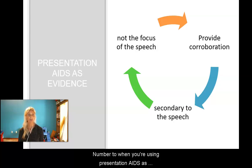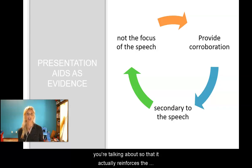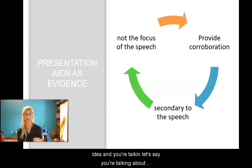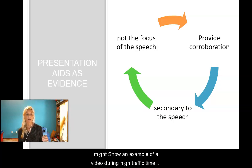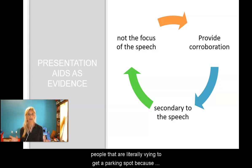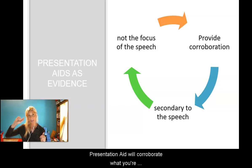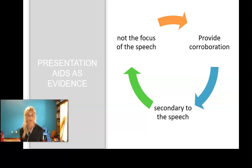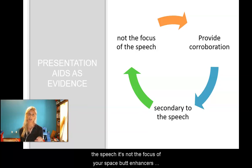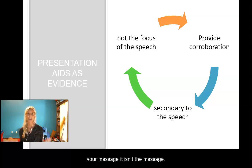When using presentation aids as evidence, you want to make sure it corroborates what you're talking about — that it actually reinforces the message you are delivering. For example, if you're talking about the problem of parking on college campuses, you might show a video during high traffic time at a university where people are vying to get a parking spot. That presentation aid will corroborate your message, serving as evidence. It should be secondary to the speech — it enhances your message; it isn't the message.